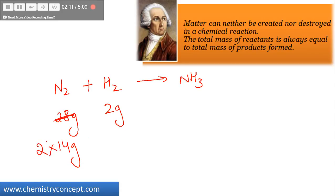Then there are two nitrogens, so it's collectively 28 grams nitrogen, 2 grams hydrogen, and ammonia. The mass of ammonia molecule is 17 grams.